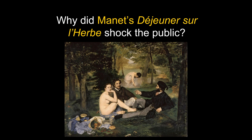Let's go back to 1863. When Manet's Déjeuner sur l'herbe was exhibited at the Salon des Refusés, it shocked the public. They considered it to be an immoral work. Why do you think this painting was so shocking?